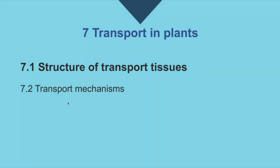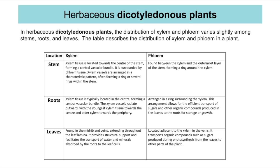Topic 7 covers transporting in plants, starting with the structure of transport tissues. This table summarises the distribution of xylem and phloem across stems, roots, and leaves. Within the stem, xylem tissue is located towards the centre, forming a central vascular bundle surrounded by phloem, often arranged in a ring. In the roots, xylem is again located centrally, with vessels radiating outwards — youngest xylem towards the centre, oldest towards the periphery. The phloem forms a ring surrounding the xylem, allowing efficient transport of sugars and organic compounds from the leaves to the roots for storage.